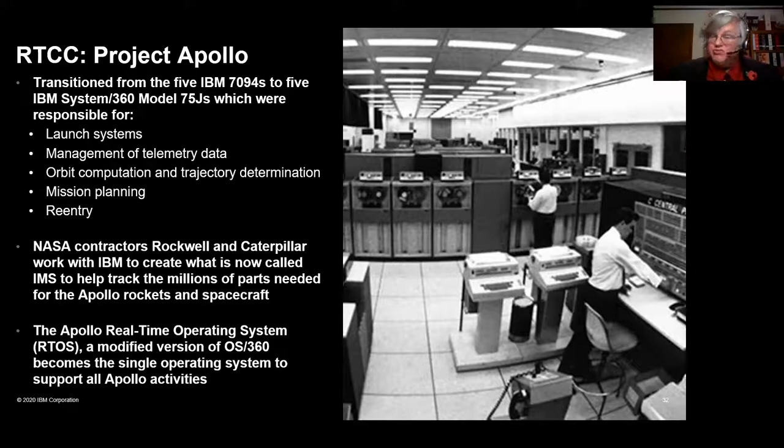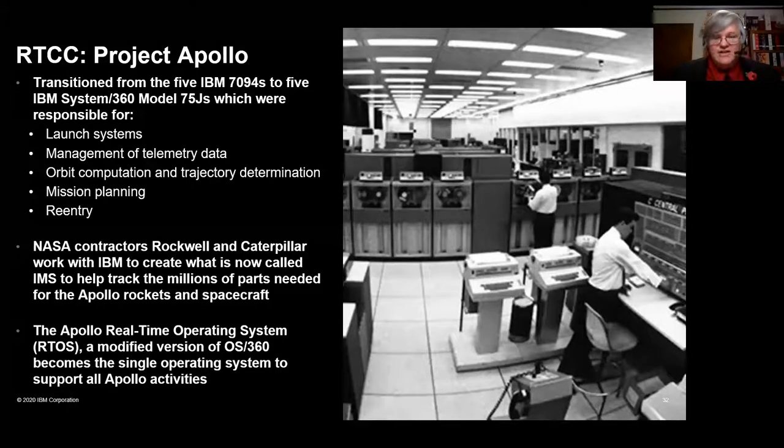There were other innovations that were more planned. Since the creation of the Saturn V rocket had several million parts made by several hundred thousand individuals and about 20,000 different vendors, NASA needed software to help manage that entire project. NASA contractors Rockwell and Caterpillar worked with IBM, and they created a database management system — which you now know and love as IMS. IMS made its commercial debut in 1968, a year before CICS, but its reason for existence was the U.S. manned space program.